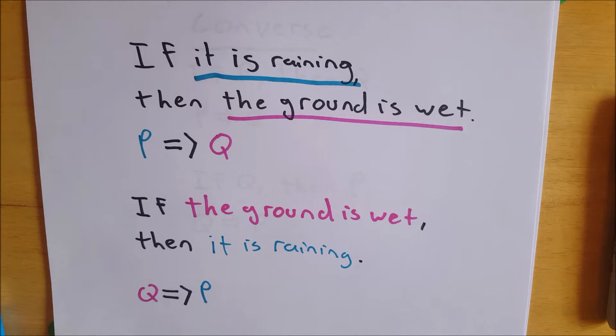If the ground is wet, then it is raining. Not true. Not necessarily true. You know, you don't know how the ground became wet. Someone, there's a number of ways. We'll not get into it, but there's a number of ways. So the converse of a statement doesn't always hold the same truth value as the original statement, which is important.